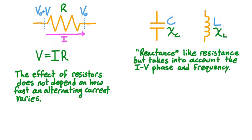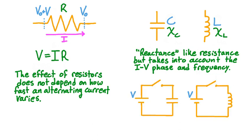We'll use the Greek letter chi to denote reactance, with the subscript C to denote the reactance of a capacitor, and the subscript L to denote the reactance of an inductor. Remember that we don't need to consider phase or frequency when dealing with only resistors, because the effect of resistors doesn't depend on either phase or frequency.